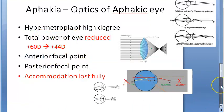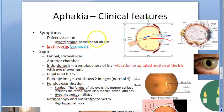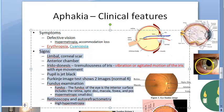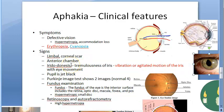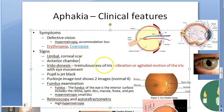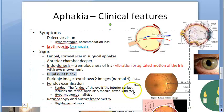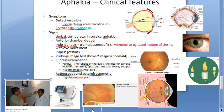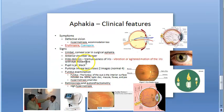We also looked at clinical features - symptoms and signs. Signs include a limbal or corneal scar if surgical, a deeper anterior chamber, iridodonesis, and a jet black pupil. Purkinje images show only two images instead of four. Fundus examination shows a hypermetropic small disc, and retinoscopy and autorefractometry show high hypermetropia.